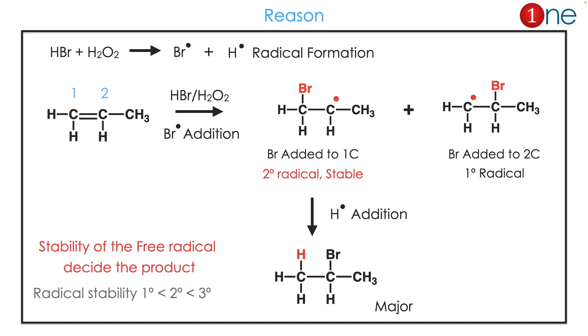One is a secondary radical and one is a primary radical. As everybody knows, the secondary radical is more stable than the primary, so it forms preferentially. Then the hydrogen radical adds and you get the final product. The major product corresponds to the more stable radical intermediate.